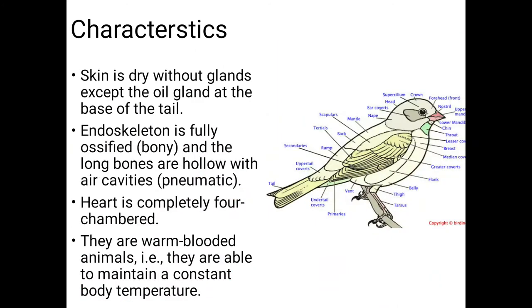The skin of birds is dry — they don't have glands, except the oil gland at the base of the tail. No other glands are present in birds; only this one oil gland is present at the tail's base.